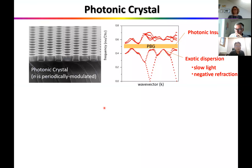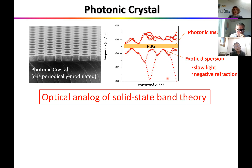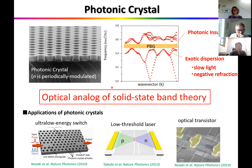Let's begin with photonic crystals. I think most of this audience already knows about photonic crystals. The definition is very simple — a refractive index that is periodically modulated. As a result, we can achieve very exotic dispersion, including a photonic band gap. This area is actually the optical analog of solid-state band theory. My background is solid-state physics, so it was natural for me to go into the photonic crystal field. We have been working on photonic crystals for almost 20 years and have achieved various nanophotonic devices.